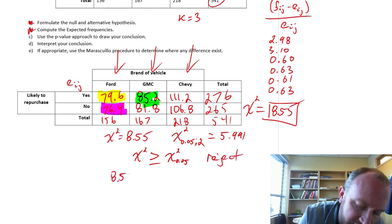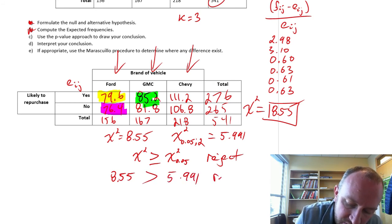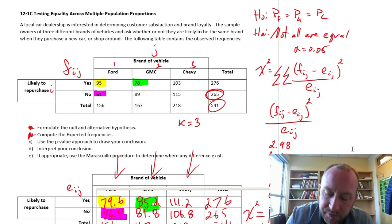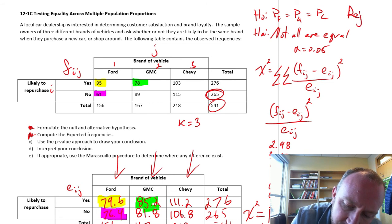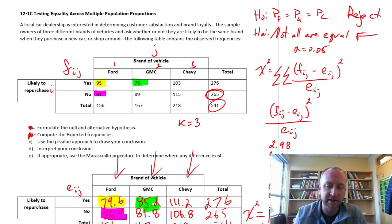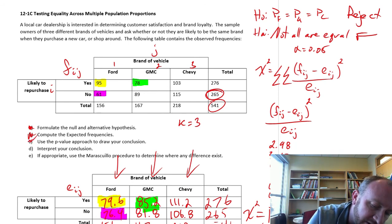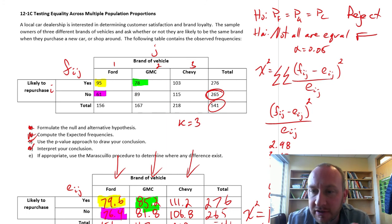And of course, 8.55 is definitely greater than 5.991, so we do have evidence here to reject our null hypothesis. We have evidence to show not all of these proportions are equal. So there is a difference in the proportion of these three different vehicle owners that are likely to repurchase that same brand of vehicle. So we've got part C done, we've got part D done. I just gave you an interpretation of that conclusion.